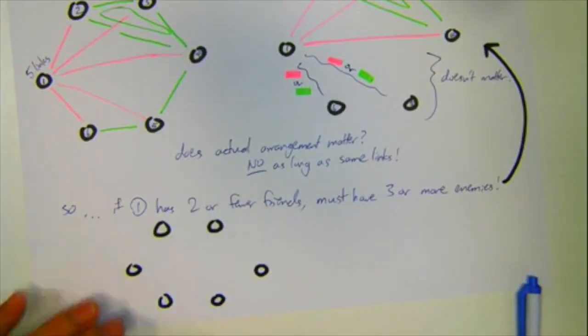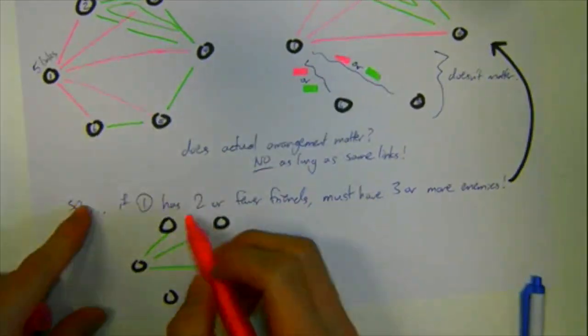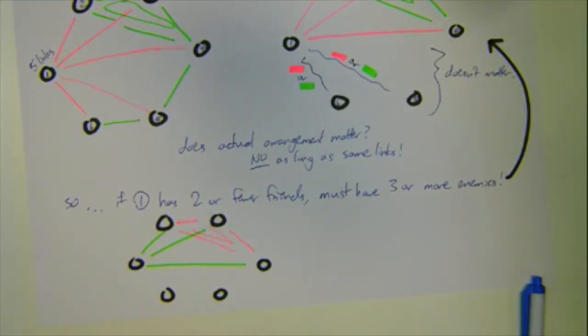We can actually repeat the same steps as above, and show that in this case, we also force the triangle of either 3 friends or enemies.